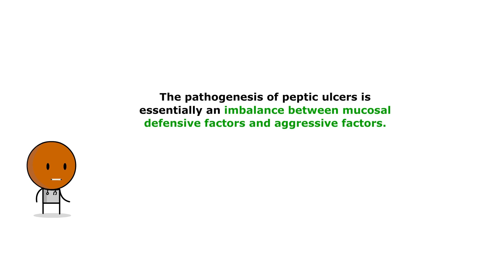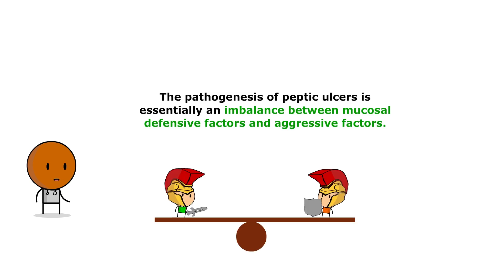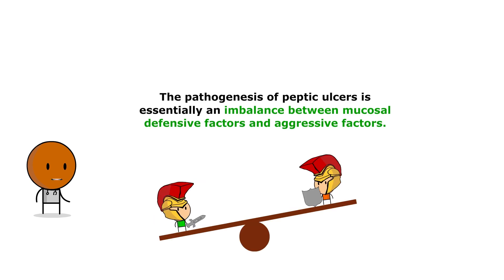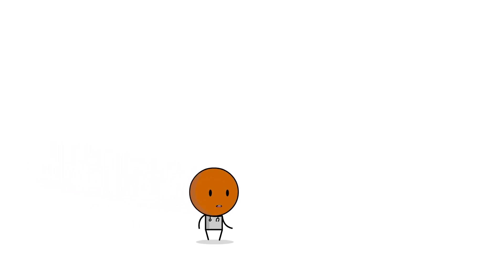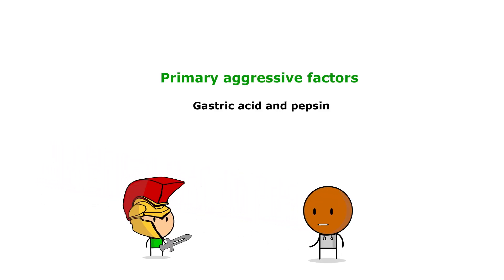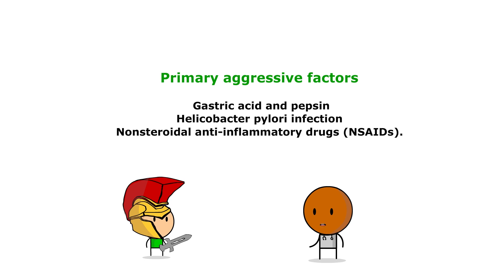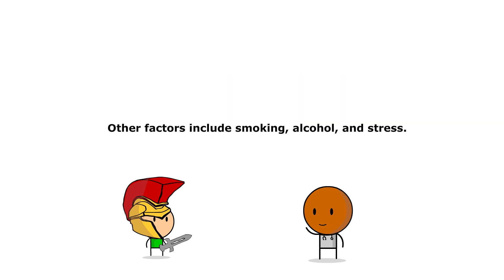It's a prevalent condition worldwide and is a major contributor to morbidity and healthcare utilization. The pathogenesis of peptic ulcer is essentially an imbalance between mucosal defensive factors and aggressive factors. The primary aggressive factors are gastric acid and pepsin, along with Helicobacter pylori infection and NSAIDs. Other factors include smoking, alcohol, and stress.